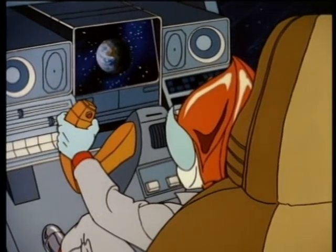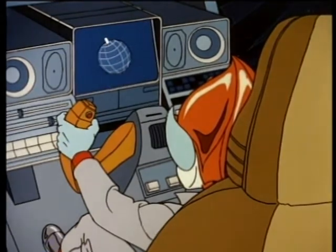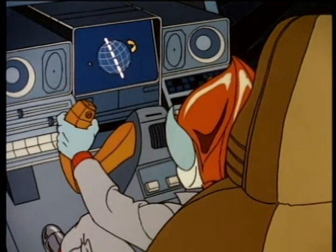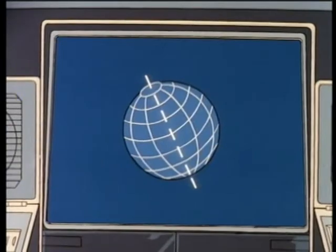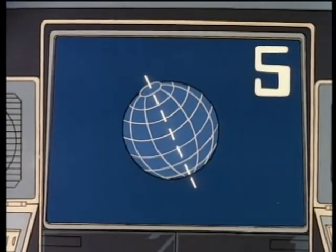The Earth spins like a top in space. It rotates around a straight line that runs through Earth from the North Pole through the South Pole. For five points, what is the name of this line?